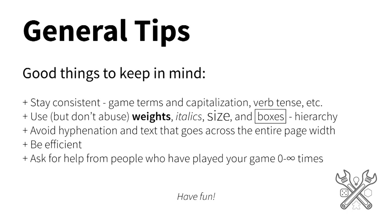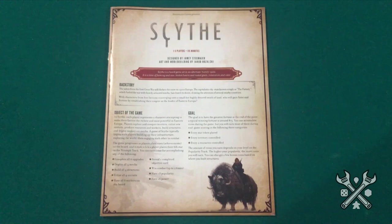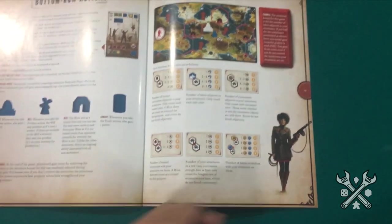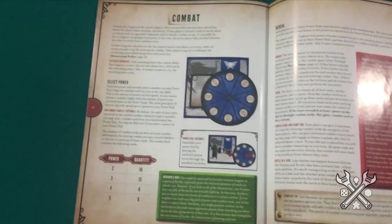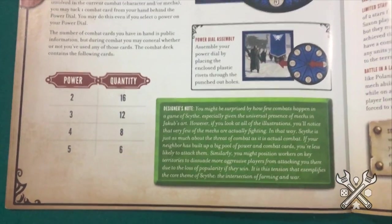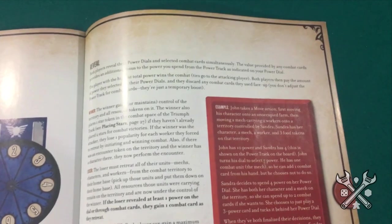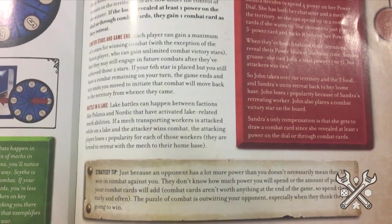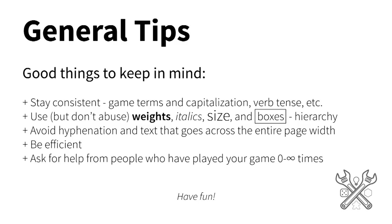Here are some tips for rulebook layout in general. My biggest one is to stay consistent with your game terms if you capitalize them, your verb tense if you decide to use present or past tense, and so on. The fewer inconsistencies you have, the easier it is for players to remember the rules. You can also help players remember things by using bold weights, italics, changing the text size, and surrounding frames of text with a box. These all fall under the umbrella of hierarchy and will help give priority to certain parts of your rulebook. I prefer not to use hyphenation and keep text from going across an entire page width, because that will exhaust the eye and make it more likely for players to lose their spots while reading. If you can summarize two paragraphs in one sentence by trimming down your rule, do so — for a lot of players, reading the rules is the least fun part, so if you can cut down reading time and get more time playing, you'll be in a good spot.